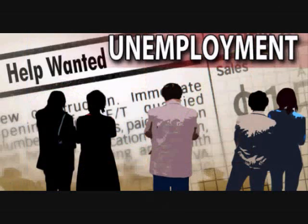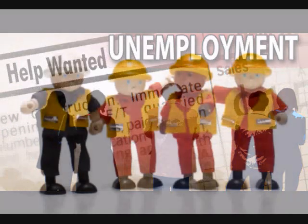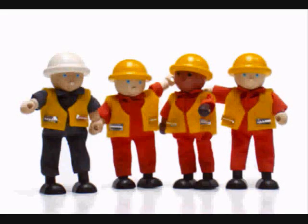Structural unemployment happens when unemployed workers are unable to fill job openings due to skill mismatch or geographical mismatch. Structural unemployment due to skill mismatch occurs when available workers do not have the skills needed to perform available jobs. Seasonal unemployment occurs when people have jobs for part of the year but are unemployed part of the year due to seasonal factors, such as construction or farm workers who are out of work because of cold weather.